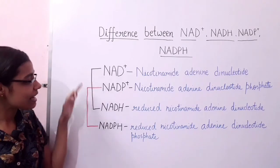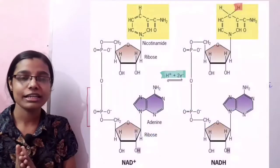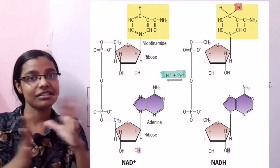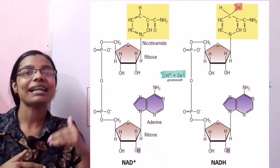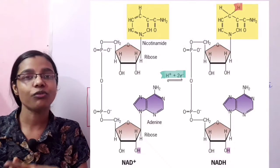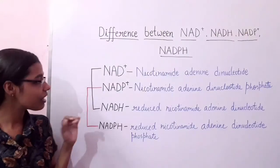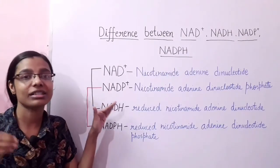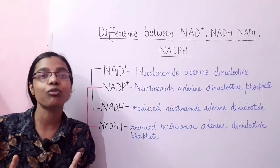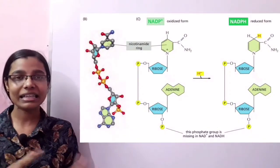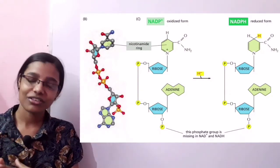NAD and NADH are similar — one is the oxidized form and the other is the reduced form. Both forms are interconvertible by means of oxidation-reduction reactions. Similarly, NADP is the oxidized form and NADPH is the reduced form, and both are interconvertible by means of oxidation-reduction reactions.